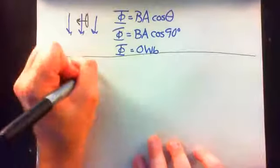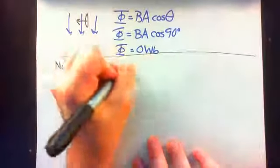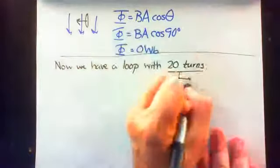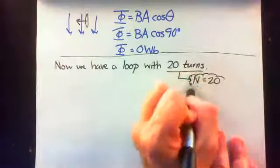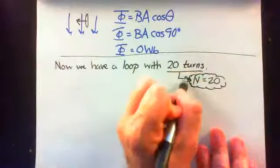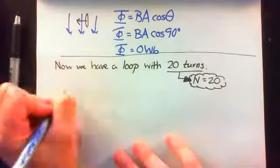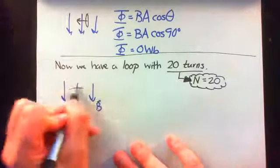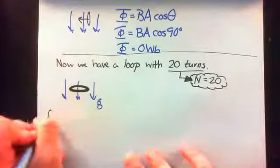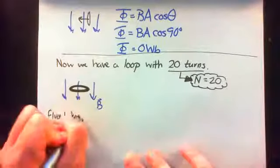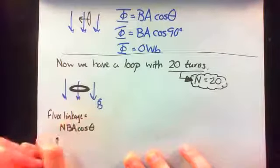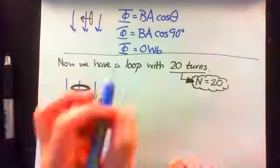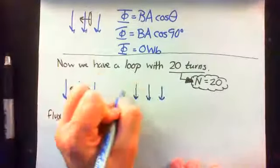Now let's think about how this would change if instead of a single loop of wire we had a loop with 20 turns. Well, then n equals 20, and the magnetic flux linkage would be 20 times the flux in each case.